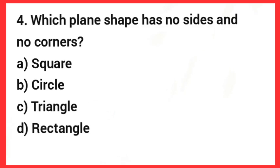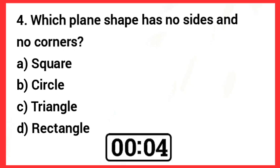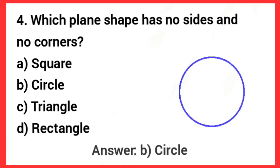Next one, which plane shape has no sides and no corners? Answer: Option B, Circle. Circle has no sides and no corners.